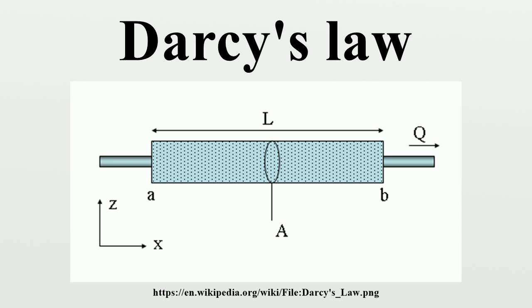Darcy's law at constant elevation is a simple proportional relationship between the instantaneous discharge rate through a porous medium, the viscosity of the fluid, and the pressure drop over a given distance. The total discharge Q is equal to the product of the intrinsic permeability of the medium, the cross-sectional area to flow A, and the total pressure drop, all divided by the viscosity mu and the length over which the pressure drop is taking place.